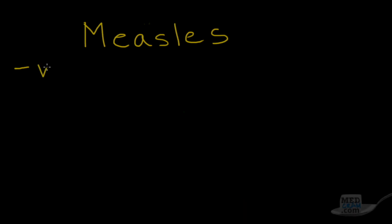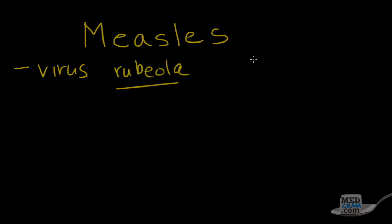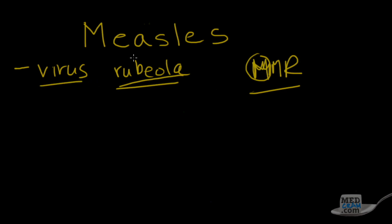First thing you should know is that it's a virus — specifically, it's the Rubiola virus. You may remember the MMR vaccine: measles, mumps, rubella. Rubella is German measles and is a milder type of disease. This is the first M in MMR. The Rubiola virus is very infectious — the estimate is that if somebody has the virus during its transmissible phase, they can infect up to 12 to 18 people. So it's very infectious and it can spread very rapidly.